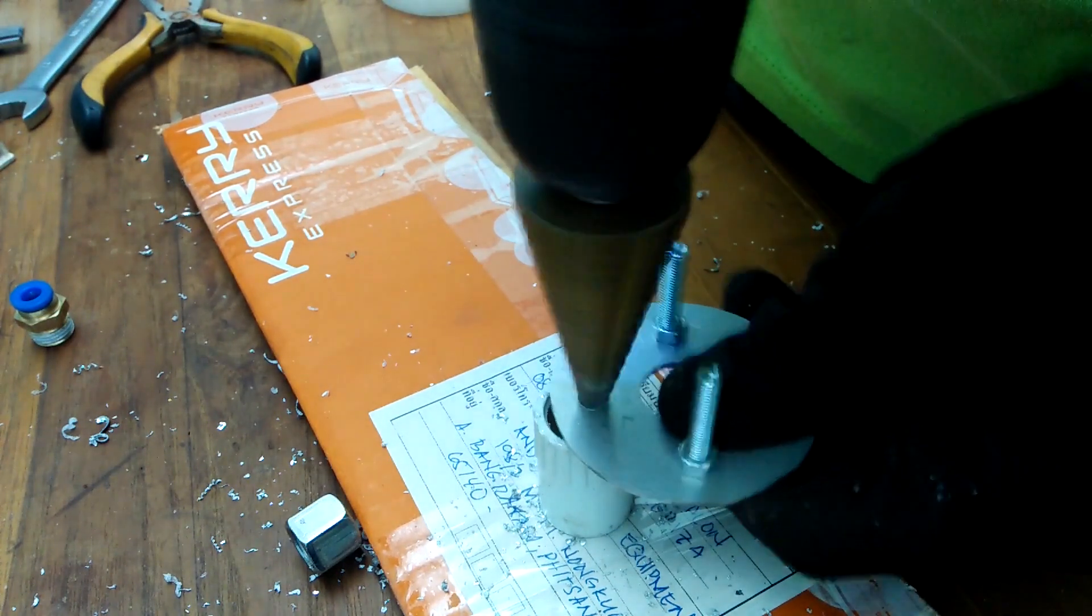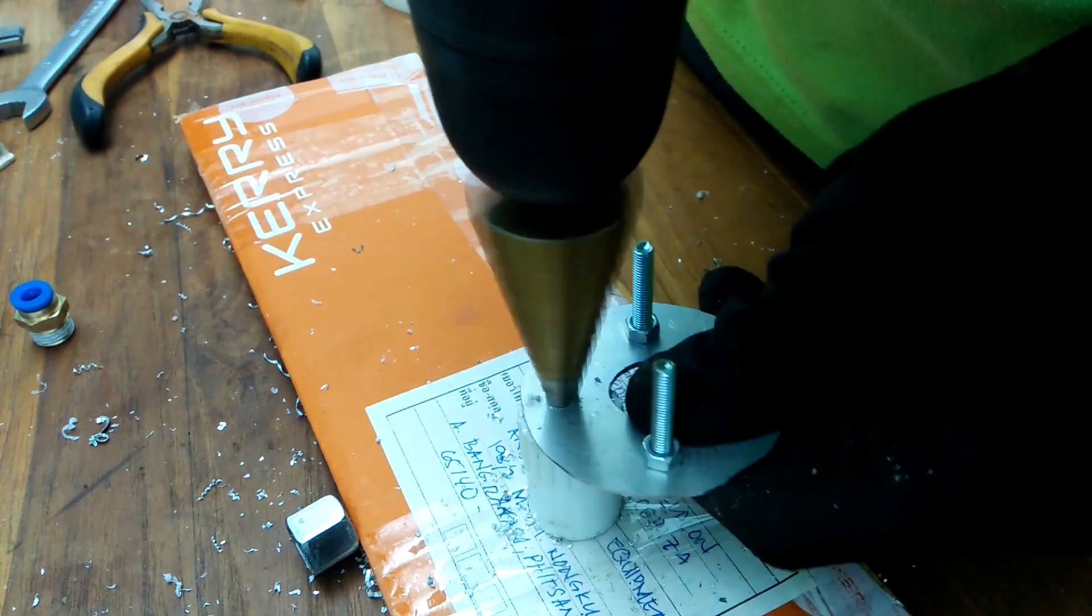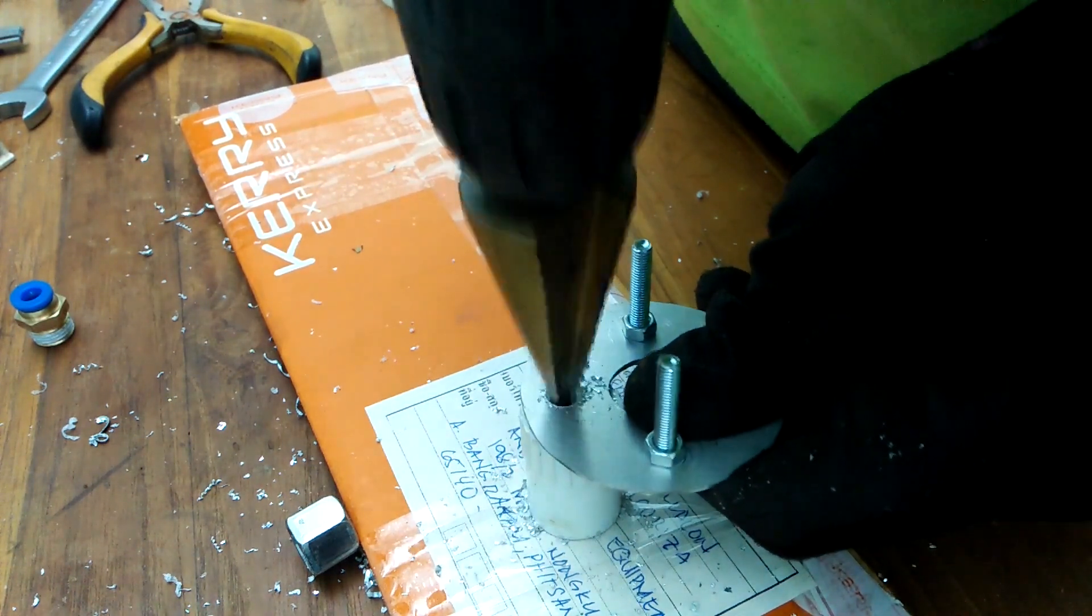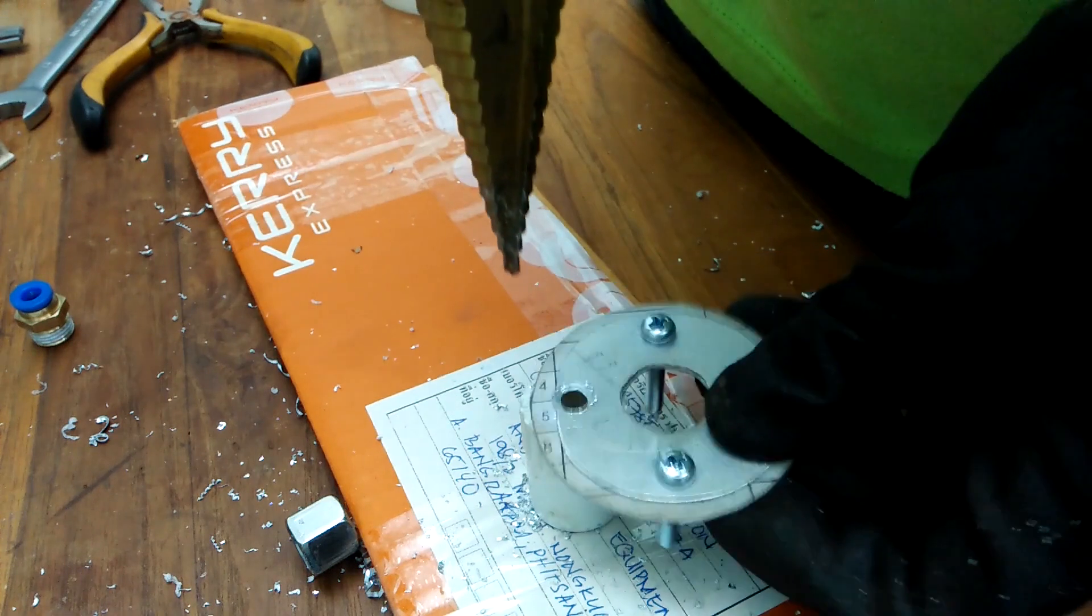I'll now show you how I made the top cap of the powder jar. The original plastic cap of the jar is not strong enough, so I have to reinforce it with two layers of aluminum sheets.